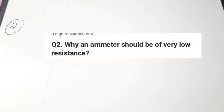The second question is: why should an ammeter be of very low resistance? This is a detailed version of the first question. An ammeter is used for measuring current, so when we want to measure current we connect the ammeter in series with the circuit we are interested in. This ammeter must be of very low resistance so that the voltage drop across it and the power absorbed by it are as low as possible.